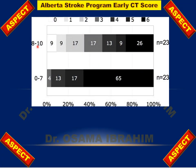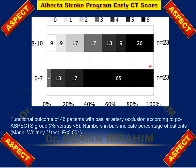The results from one study show that for patients with an ASPECTS score of 8 to 10, the worst outcome rate is only 26%. However, when the ASPECTS score is less than or equal to 7, the worst outcome rises to 65%, confirming that ASPECTS of 8 to 10 is associated with good prognosis compared to lower scores.